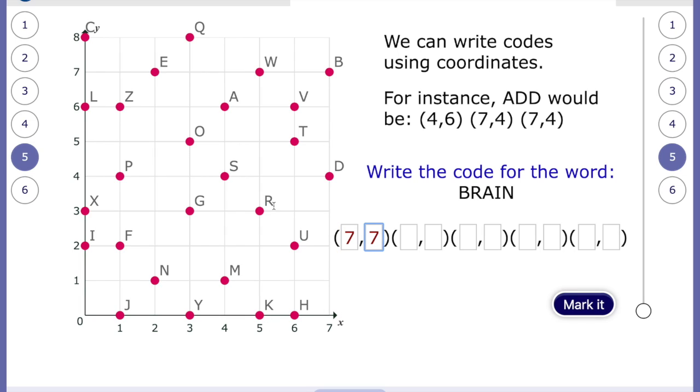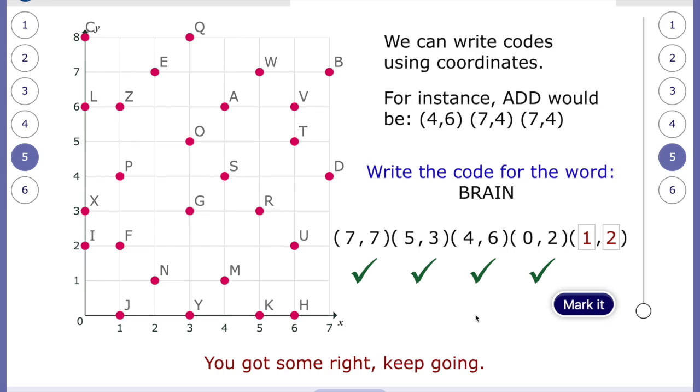Then we have the letter R. Here's R. Five, three. A. Read the x-axis first. First it's four, six. I is zero, two. And the last one. N is one, two. Let's have a look. Oh, no. We've made a mistake. What was our mistake on the letter N? I said one, two. Well, then there is one. Ah. I've written the coordinates around the wrong way. Remember, it's the x-axis first. So two, one. Hooray.